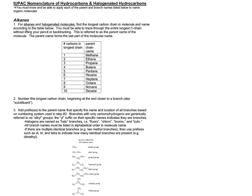Let's take a look at these rules for naming and apply them toward naming alkanes and haloalkanes. Among the materials provided for this module, you will find a handout featuring information on IUPAC nomenclature of hydrocarbons and halogenated hydrocarbons — meaning haloalkanes. We are going to apply these rules one step at a time toward an example problem using a line angle formula.